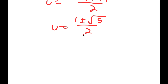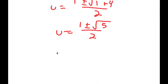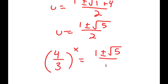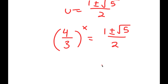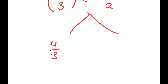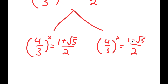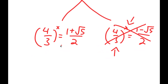Remember how we let 4 over 3 to the power of x equal to u — well, this means that 4 over 3 to the power of x equals 1 plus or minus the square root of 5 over 2. That gives us 4 over 3 to the power of x equals 1 plus the square root of 5 over 2, and 4 over 3 to the power of x equals 1 minus the square root of 5 over 2. Now 1 minus the square root of 5 is going to be a negative number, and a positive number to some power can't equal a negative number — so there's no solution to that equation, and all that's left is the first equation.